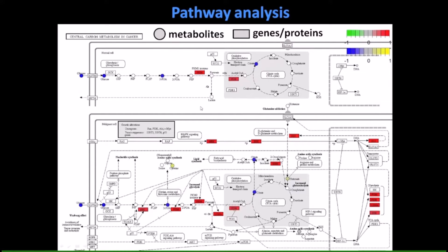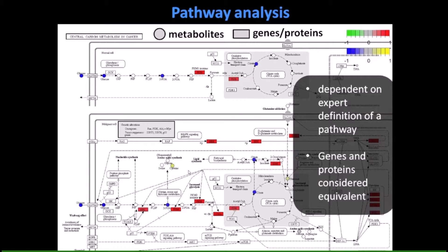Here's an example of pathway analysis where circles are metabolites and squares are genes, comparing lung cancer versus control. With metabolomics alone you might conclude glycolysis is going down — all metabolites are blue (decreased). With proteomics alone it looks like the opposite — proteins are red (increased). But combining both, you look for species going the same direction across platforms. Cysteine and glutamine become the driving story: proteins up, metabolites down, suggesting metabolic flux is being shuttled into glutamate and cysteine. However, this method depends on expert pathway definitions.